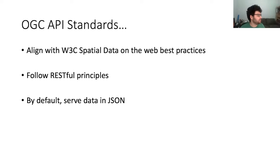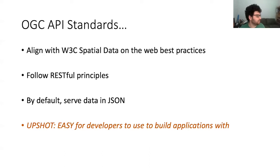The OGC API standards try to align with W3C spatial data on the web best practices. This means they're associated with HTML landing pages so search engines can crawl and index them. They follow RESTful principles and serve data by default in JSON. The upshot is they're designed to be very easy for developers to use to build applications with — much simpler than the older generation of OGC standards like the Web Feature Service, which were based on XML encodings.